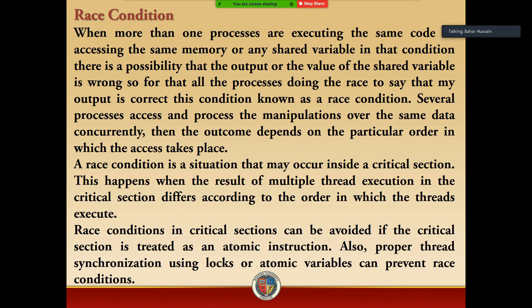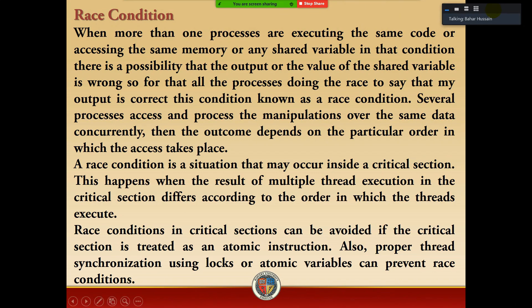Race condition: When more than one process is executing the same code, or accessing the same memory or any shared variable, in that condition there is a probability that the output or the value of the shared variable is wrong. So all the processes are racing to say that my output is correct. This condition is known as the race condition.